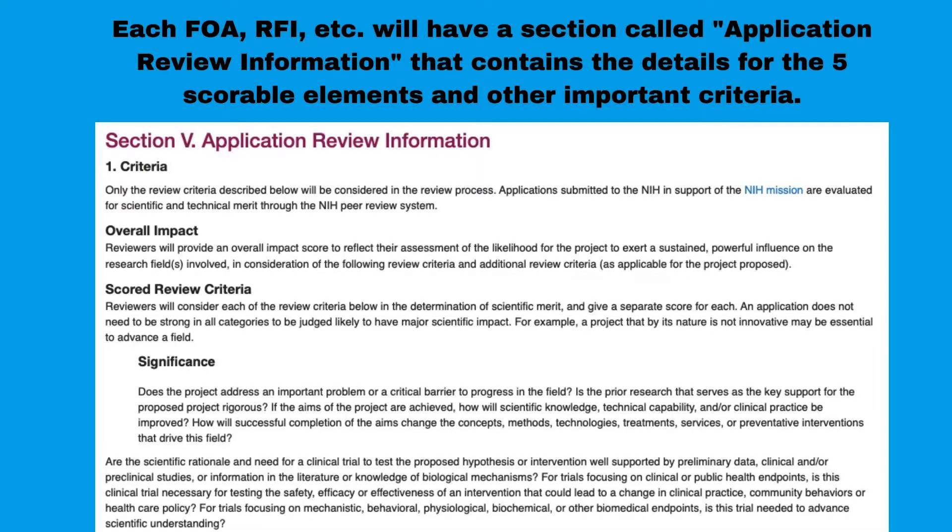Where can you get more information about what goes into significance, innovation, approach, investigator, and environment? When you are applying to the NIH, you'll be applying to a specific FOA, RFI, or other type of funding instrument. Go into that document and read it section by section — you'll find a section called Application Review Information, which will contain the details for the five scorable elements. For certain funding instruments, there will also be additional important criteria. Those additional criteria are not part of the scorable elements; reviewers can still make comments about them, but they won't factor into the score.